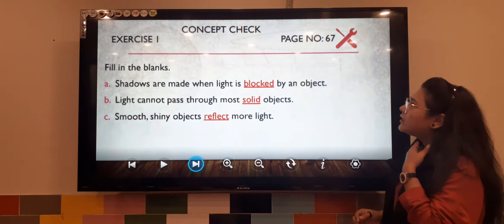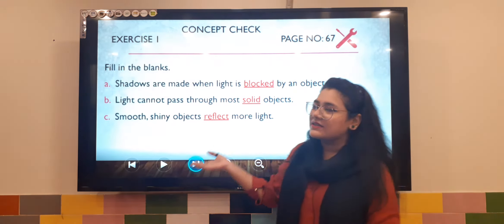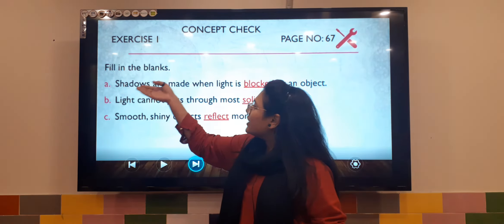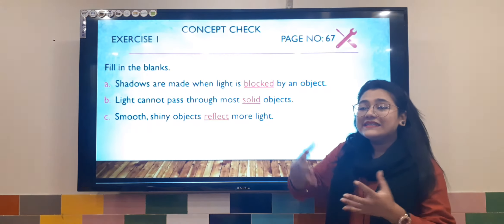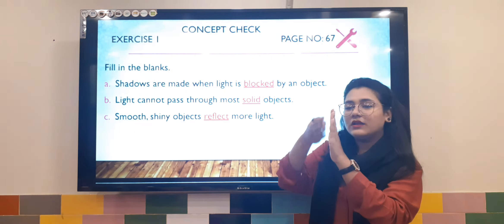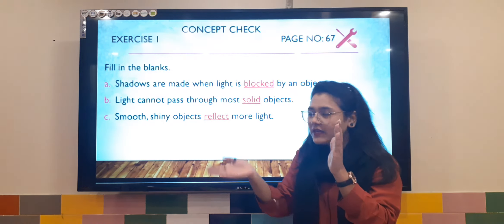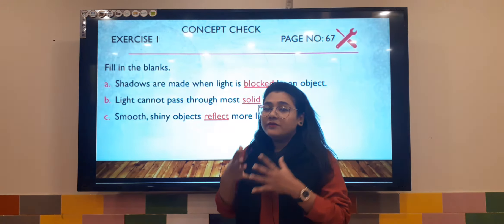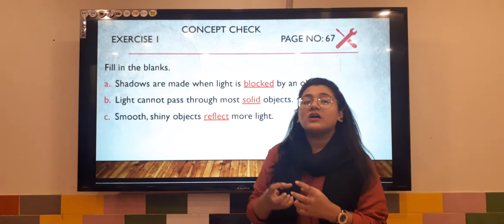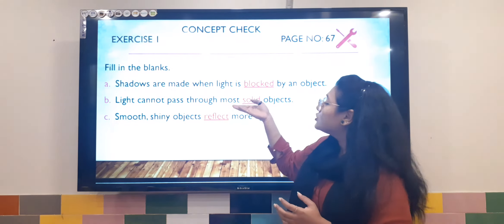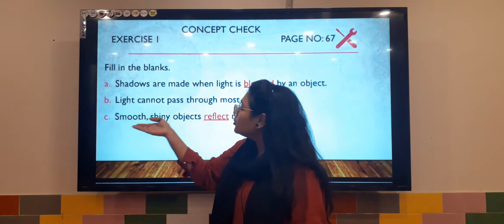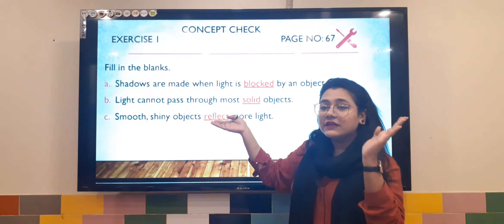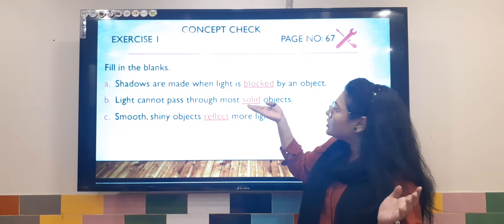The other exercise is concept check on page number 67, exercise one — fill in the blanks. Shadows are made when light is blocked by an object. Light cannot pass through most solid objects, which are called opaque. Smooth and shiny objects like gold and steel reflect light. So the answers are: blocked, solid, and reflect.